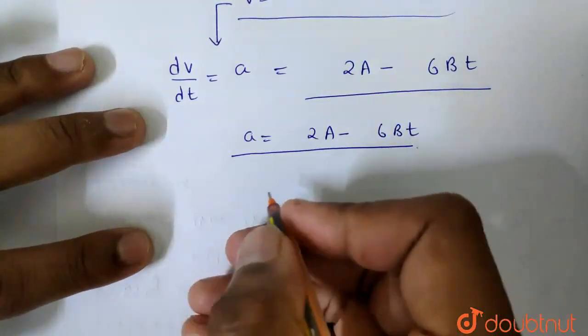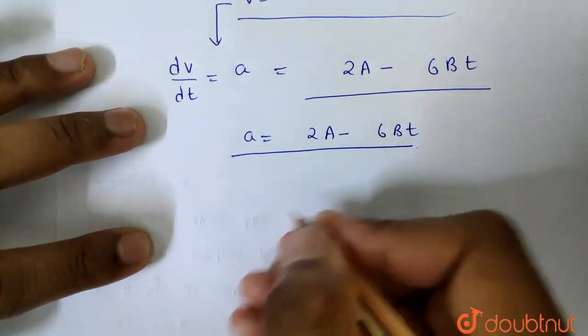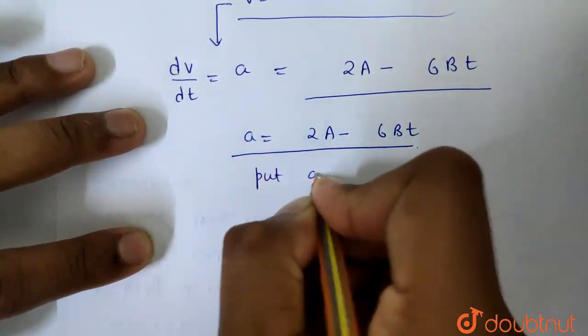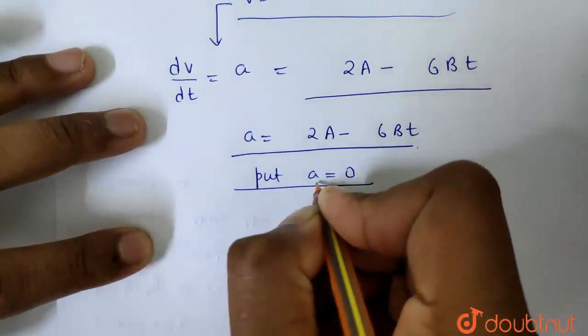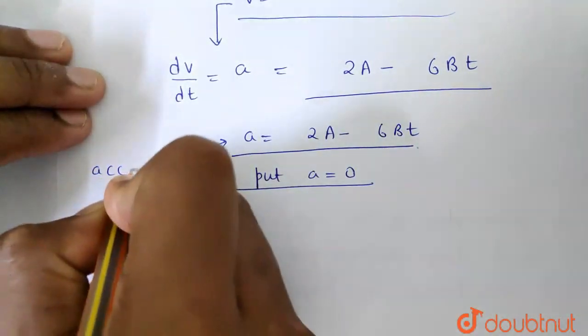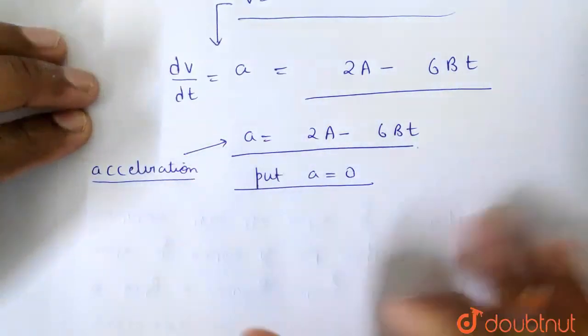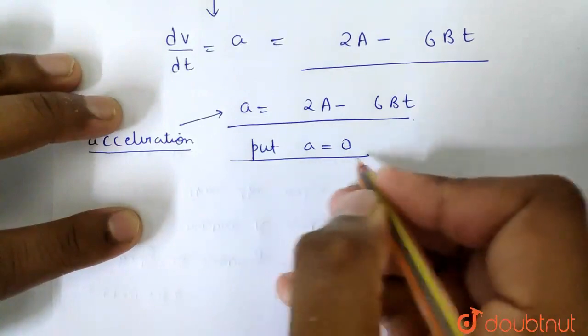Now we have asked if acceleration is 0, so the time will be... We will put acceleration equal to 0. Put a equal to 0. Here a is acceleration. You have to see that a is acceleration, don't be confused. It is acceleration. So put a equal to 0.